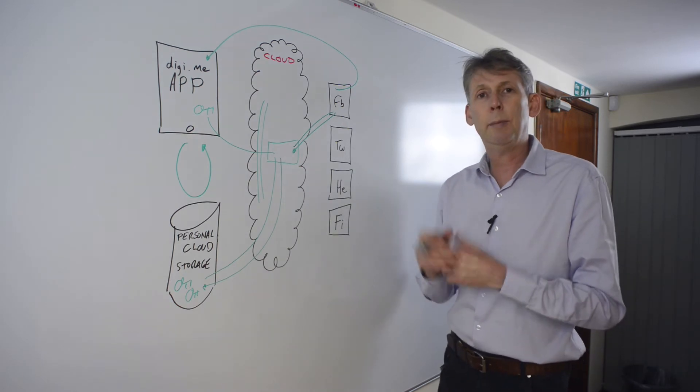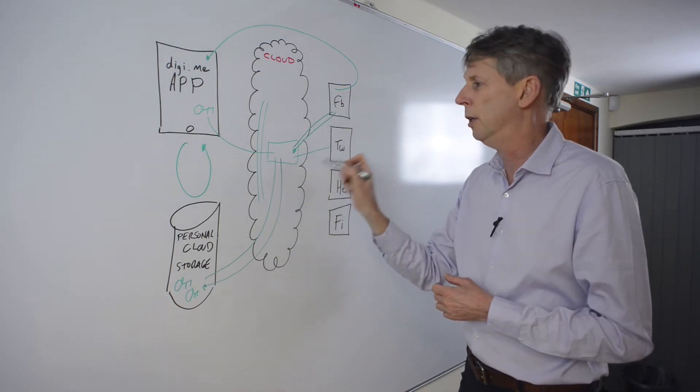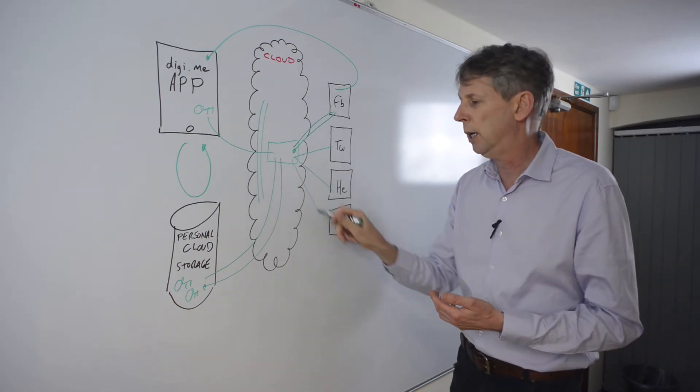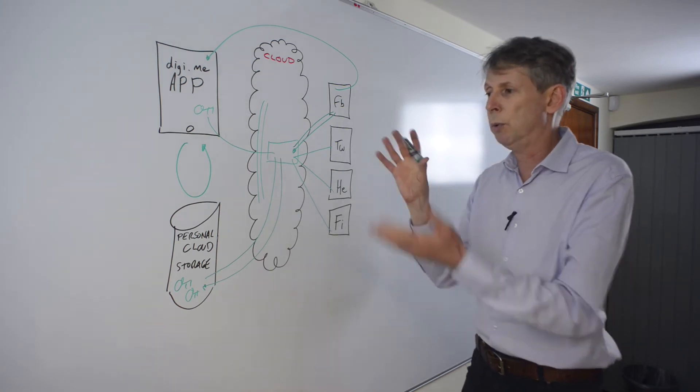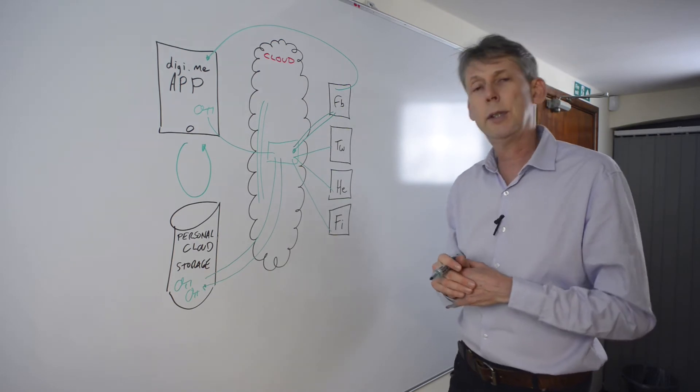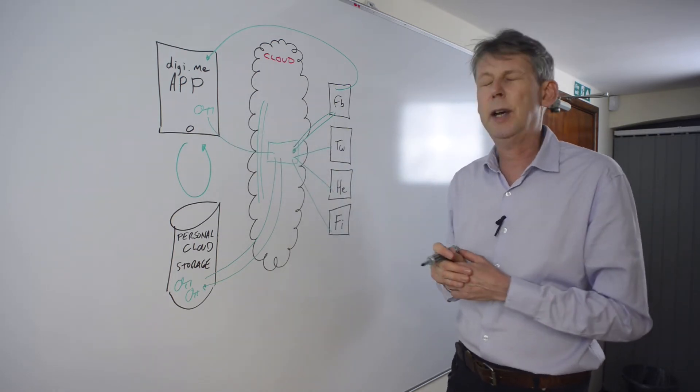So we've now created the ability to add one data source and you can in fact repeat that to add Twitter, multiple health service providers around the world and also various banking and financial service providers. So what we've now created is a basic architecture where all of these data owners, they own the user's data, have actually made it available to them.